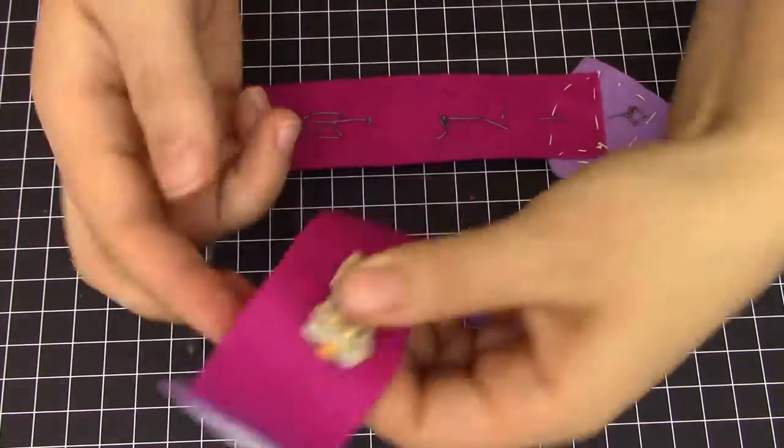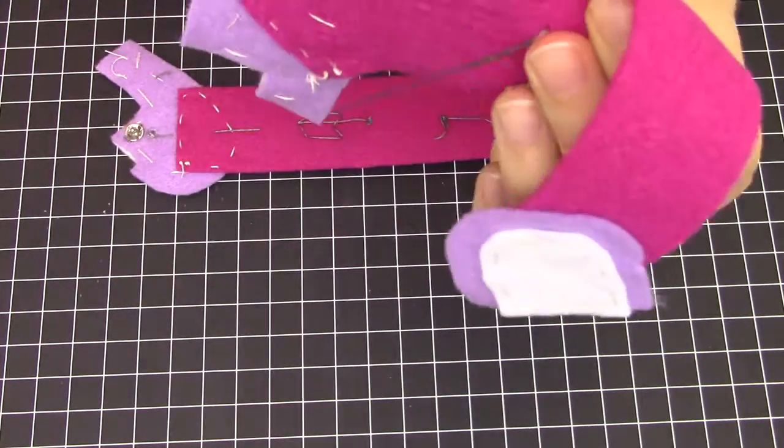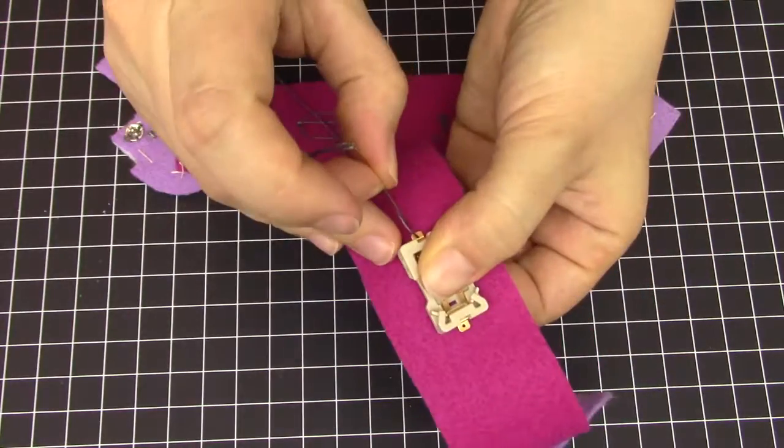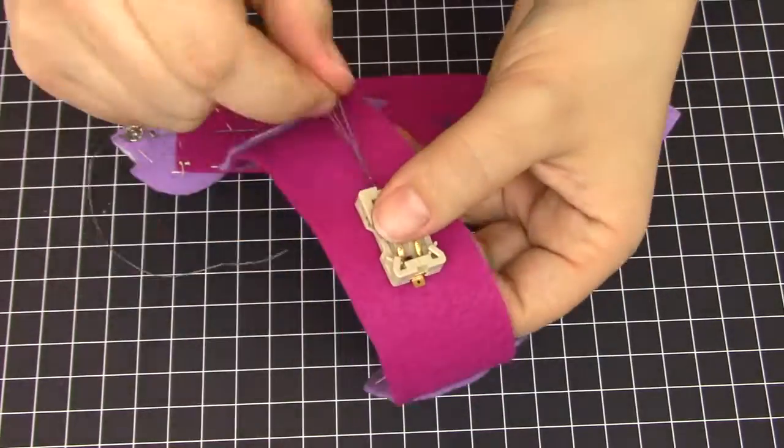First, we will attach the battery holder. Starting from the back side, put the needle through the hole in the positive end tab. And sew around the tab, two or three times, to make a good electrical connection.